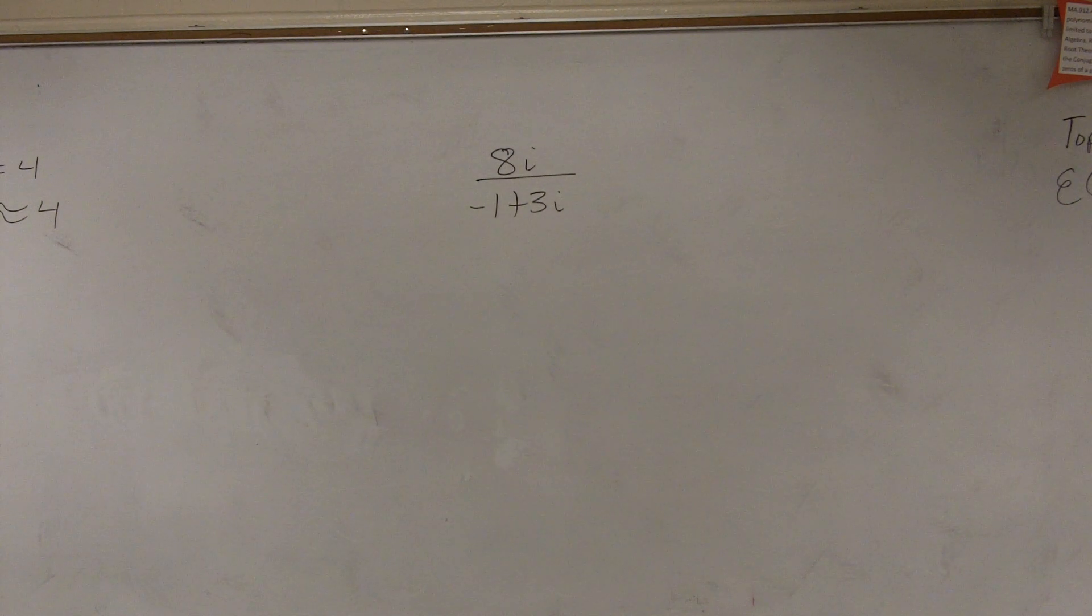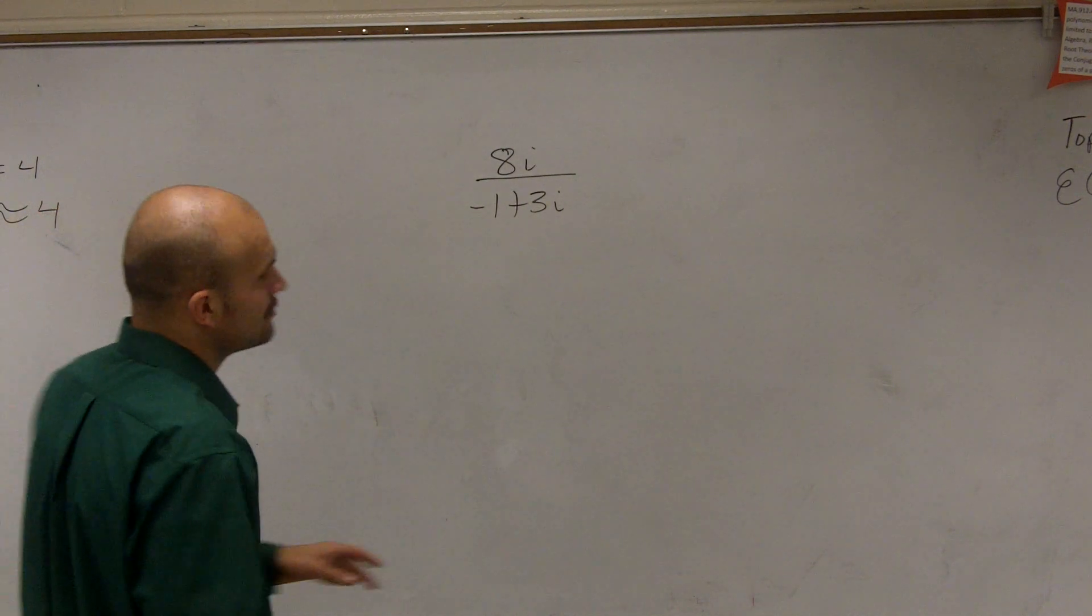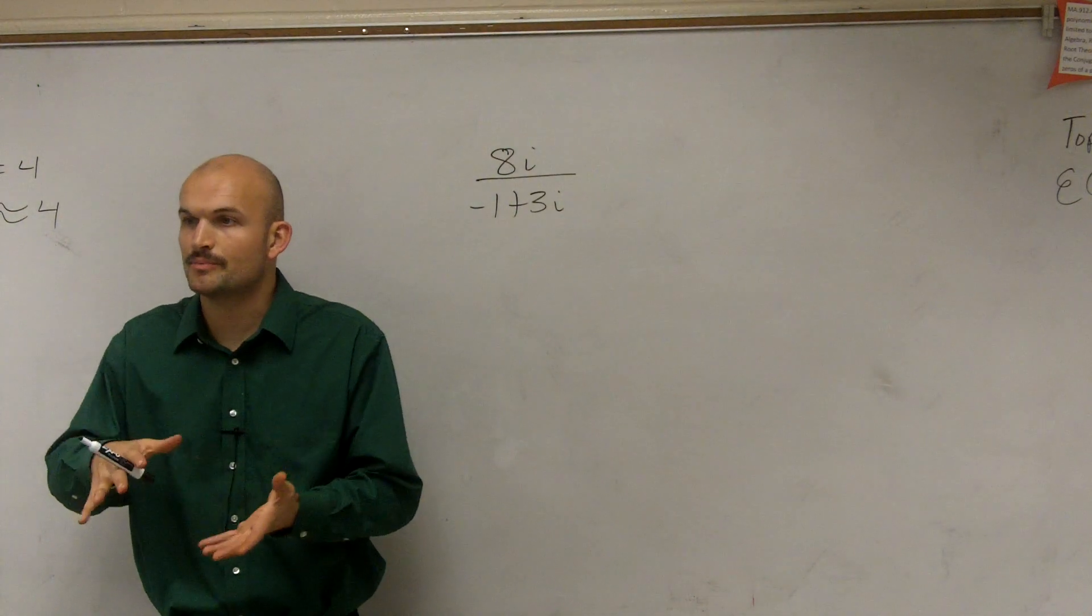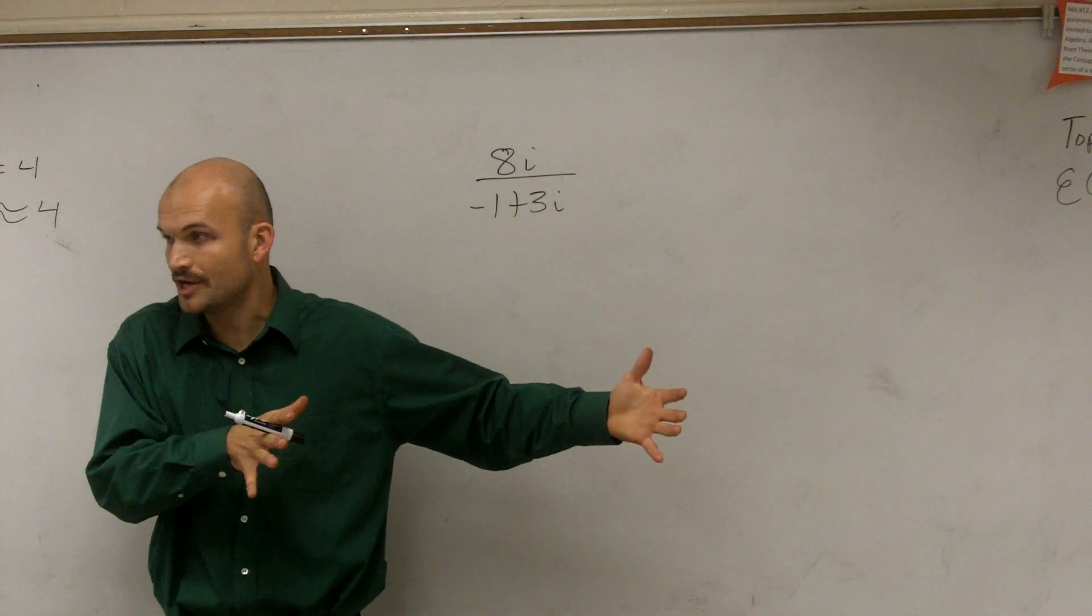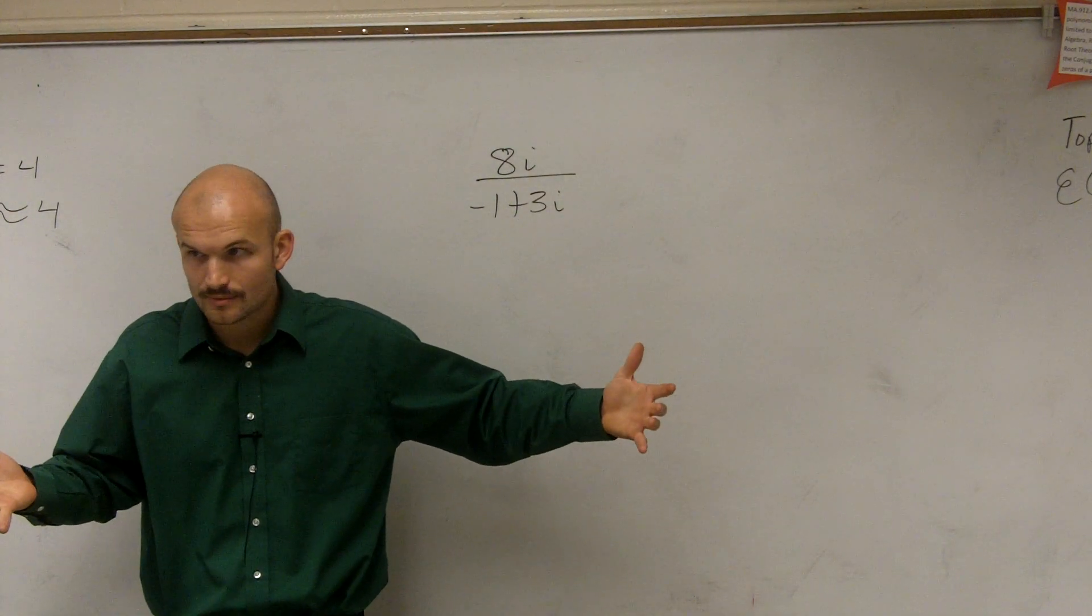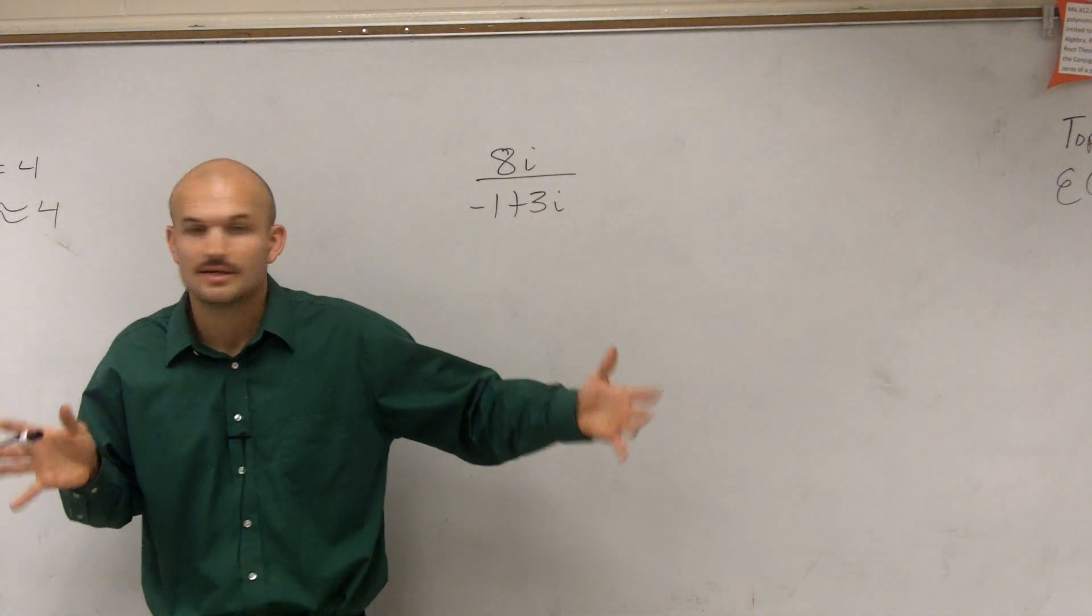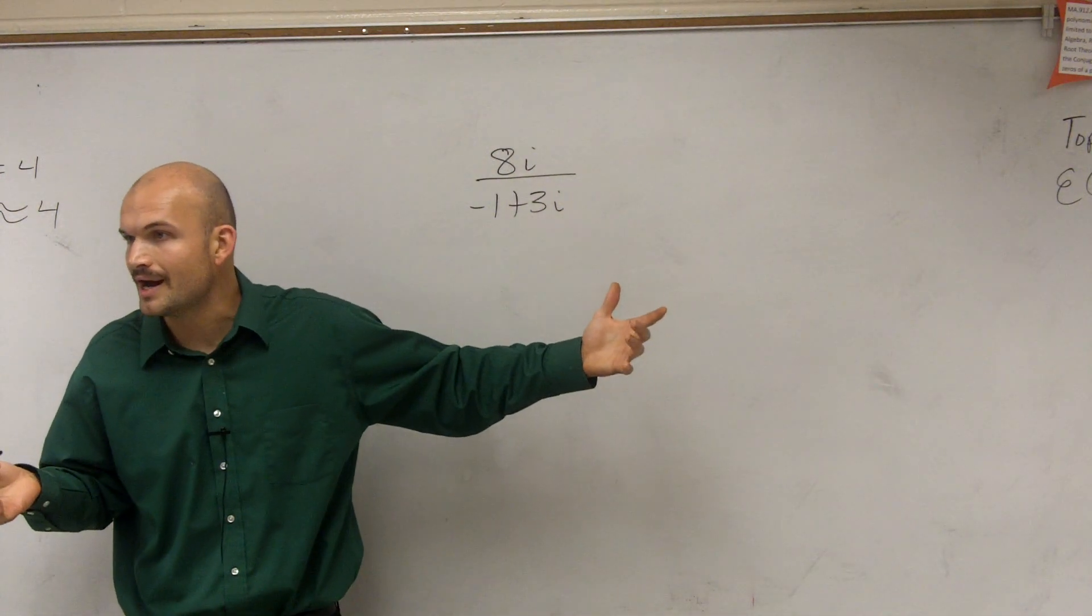Alright, to show you guys how to do a problem like this. You guys remember the other problem? To get rid of i, we just multiply by i, right? Can you take i to multiply i? To get rid of i on the bottom, we just multiply by i.